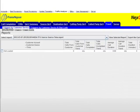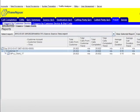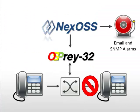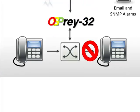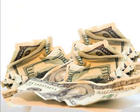Another powerful feature is fraud detection. NexOSS can automatically detect and block fraudulent calls, saving potentially tens of thousands of dollars for each fraud event.